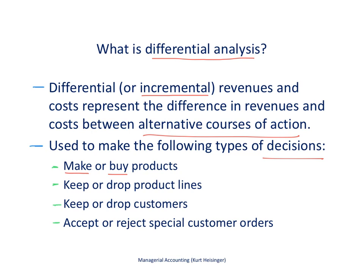Some companies also want to look at whether to keep product lines or to drop product lines. For example, we could be a hardware store carrying an outdoor furniture product line and a plumbing product line, and we can assess whether it makes sense to keep both or drop one. Thirdly, we might want to decide on keeping or dropping customers — some customers may not be profitable, and we may choose to drop them.